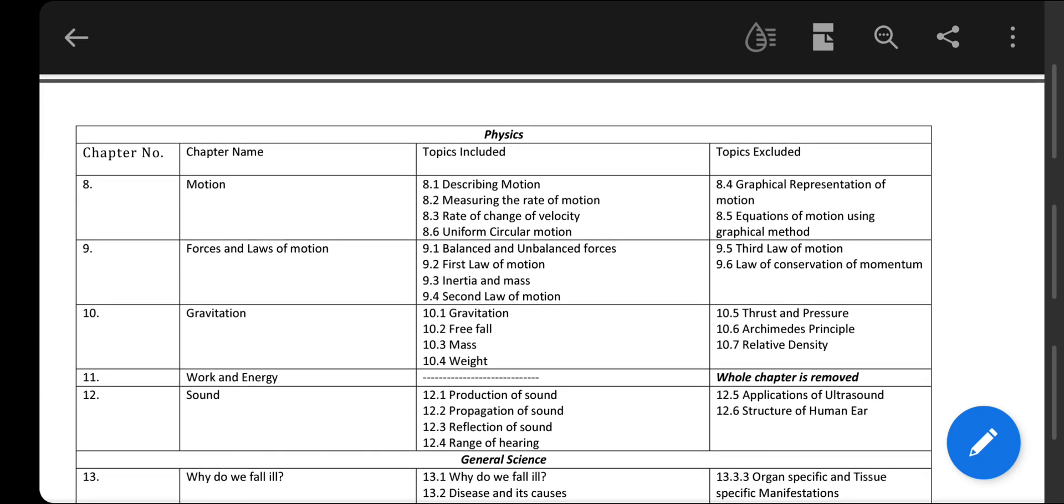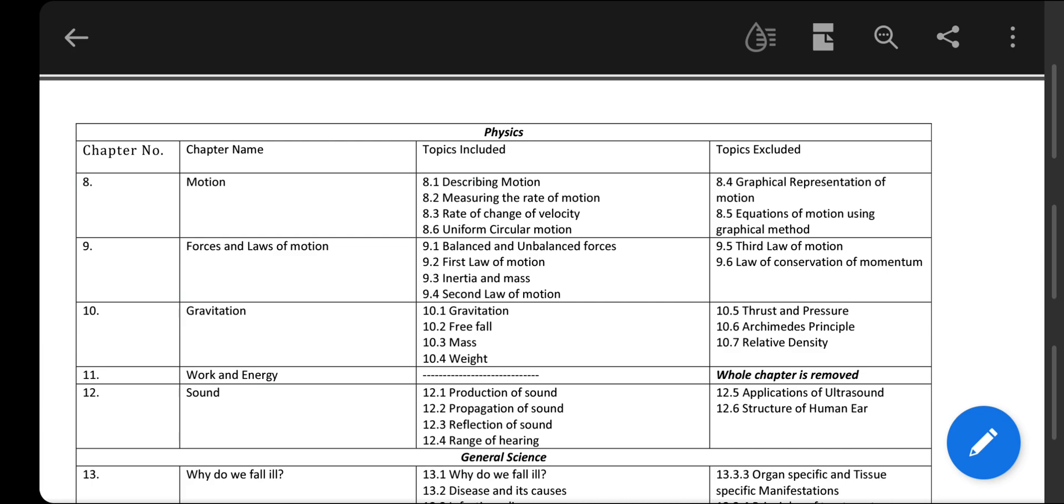Now coming to the physics portion, there are mainly five chapters. First is Motion. In motion you have to study four topics: describing motion, measuring the rate of motion, rate of change of velocity, and uniform circular motion. The topics excluded are graphical representation of motion and equations of motion using graphical method.